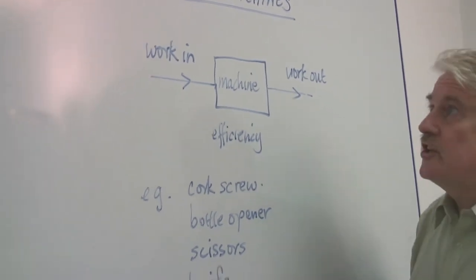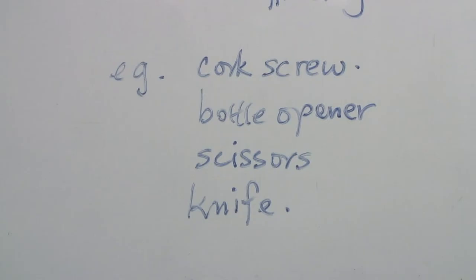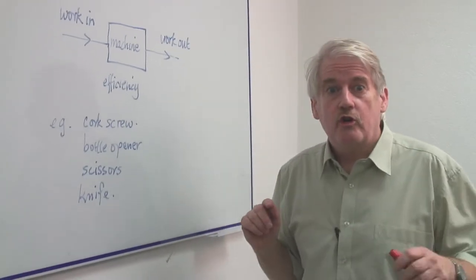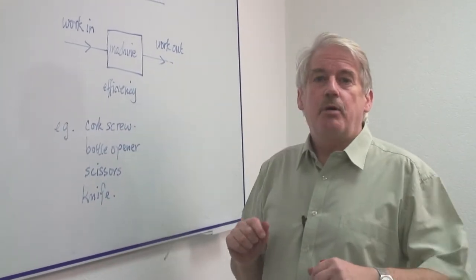So, examples of simple machines are, for example, a corkscrew. Now, if you've ever tried removing a cork from a bottle with your fingers, you'll know it isn't possible.